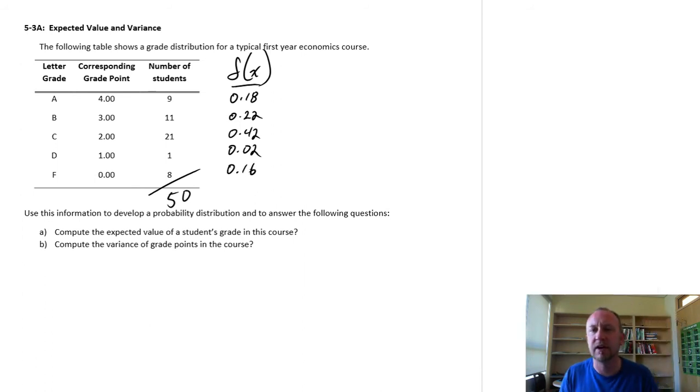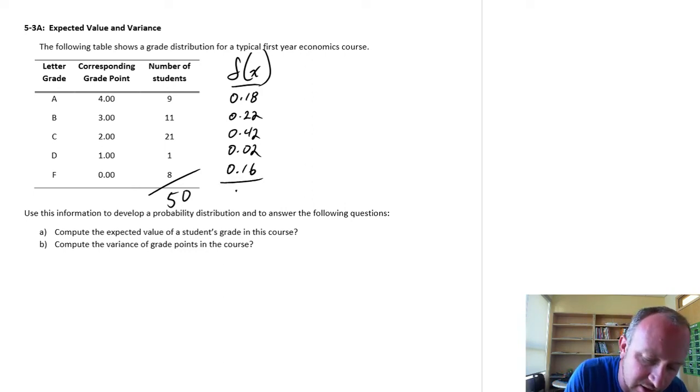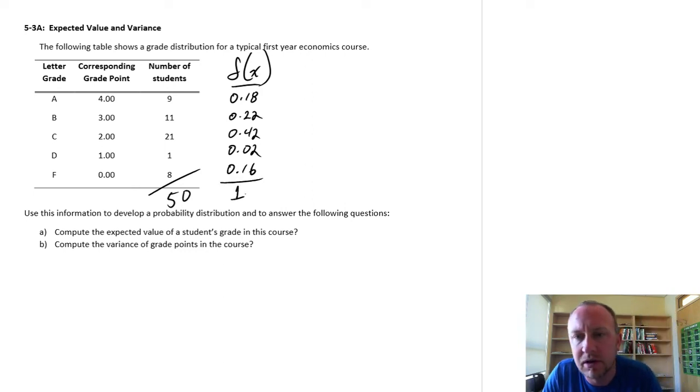Now you can verify for yourself if you need that this satisfies the conditions of a discrete probability distribution. None of my probabilities are negative and you can add all of these up and they will sum to 1.